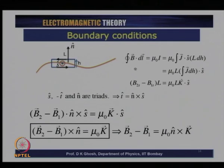We find that (B_2t minus B_1t) dot l equals mu_0 l K dot s, which tells us that the tangential component of the magnetic field has a discontinuity when there is a surface current across the two media. This is very similar to the electric field case, where the normal component of the electric field had a discontinuity when there was a charge density on the surface. We will return to these boundary conditions in the next lecture.